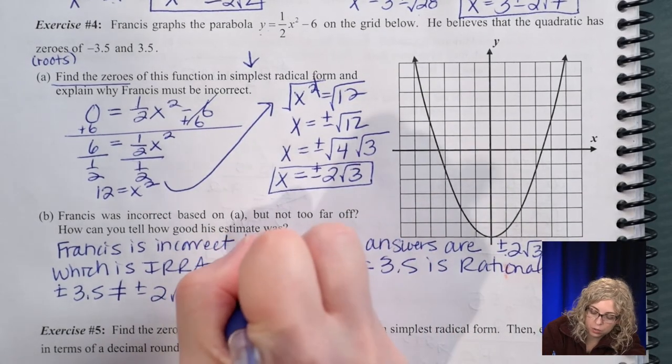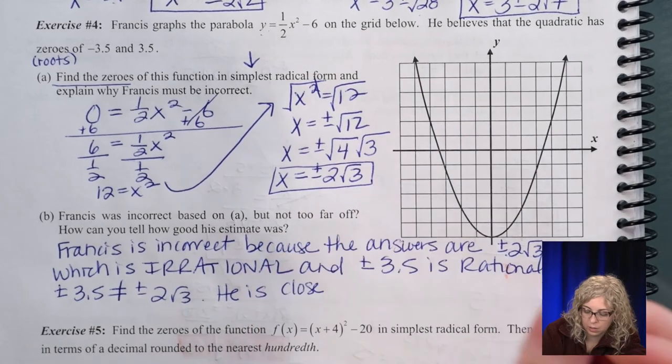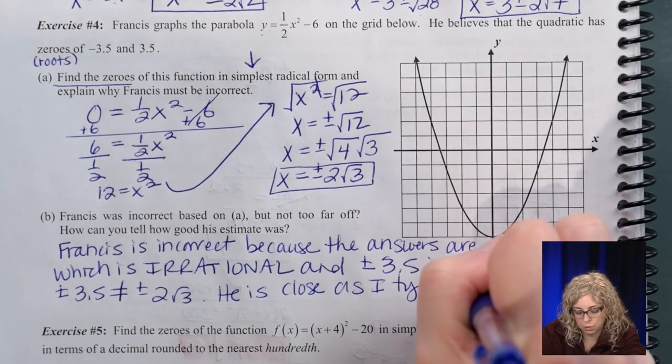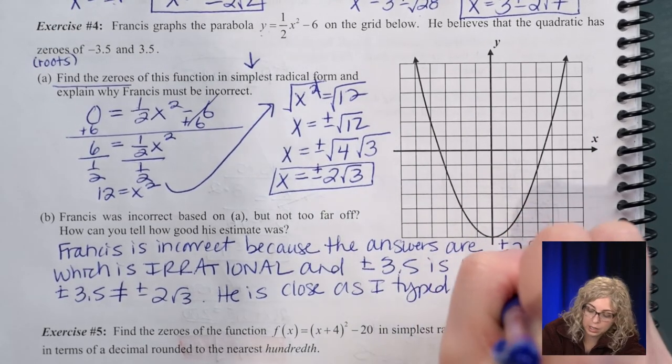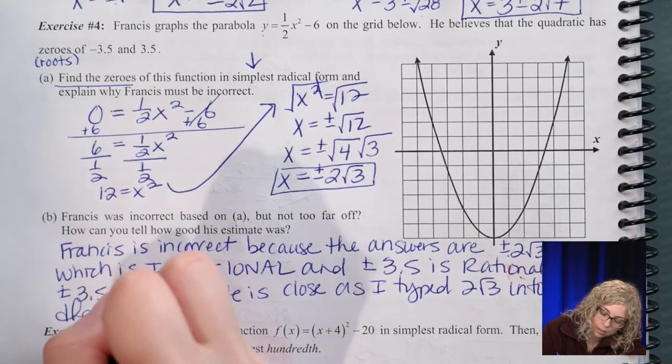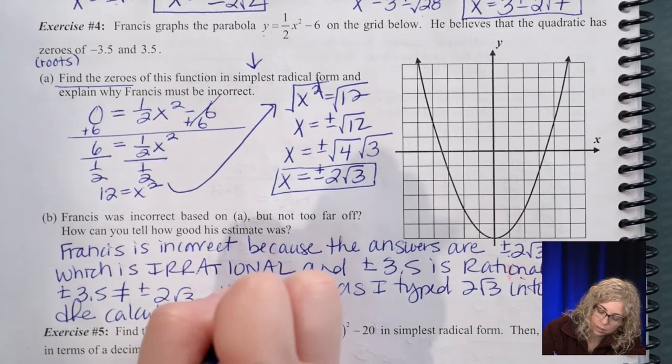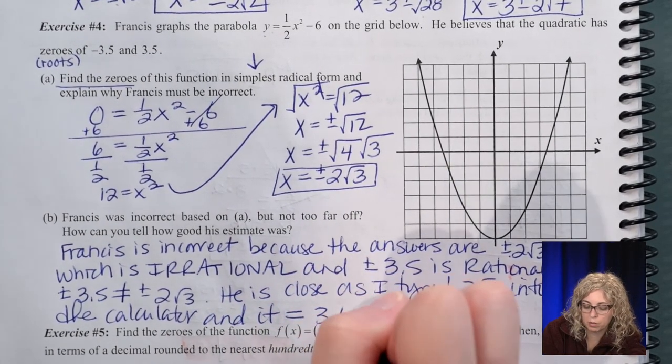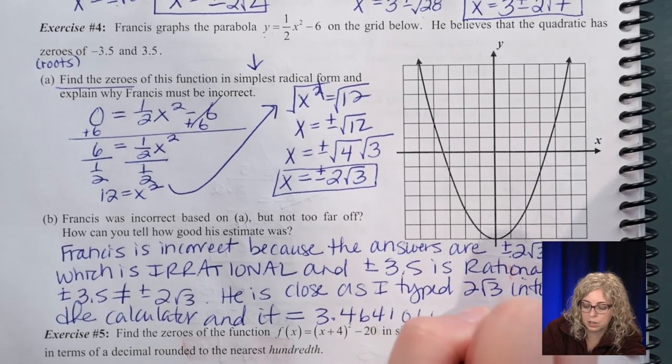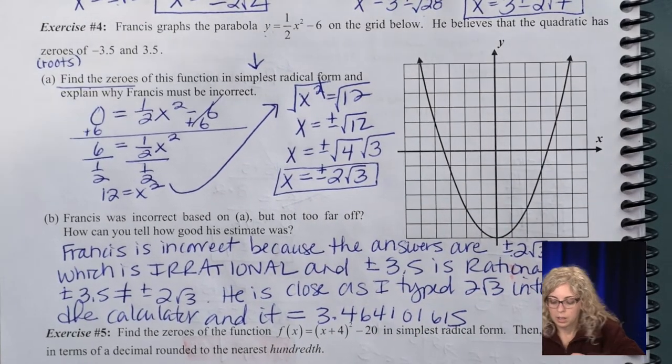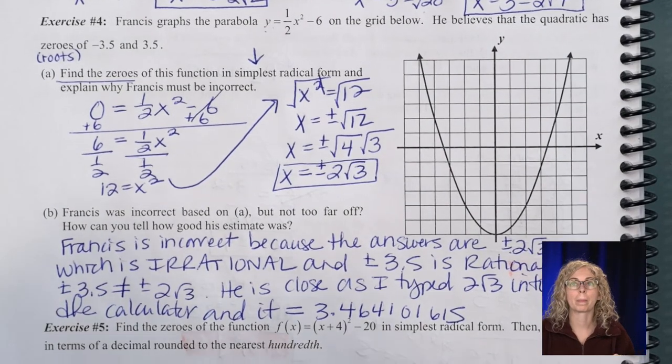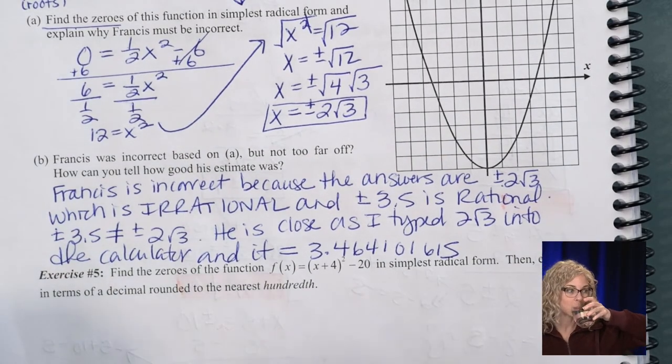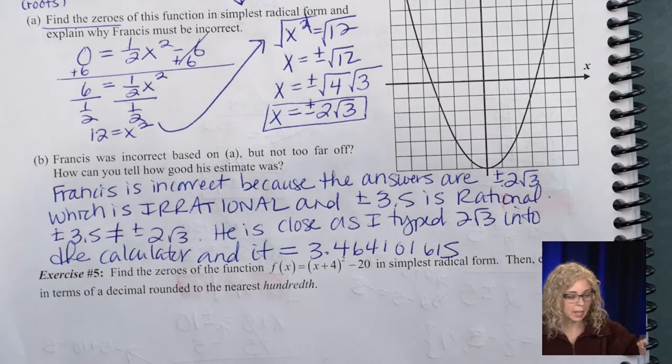Okay. He is close. Yes. I'm going to say, as I typed 2, right, radical 3 into the calculator, and it equals 3.464101615. So, number 5. All right. Whew. One last example. So, take a minute to copy that down. I'm going to drink a water. And, we'll finish this up.